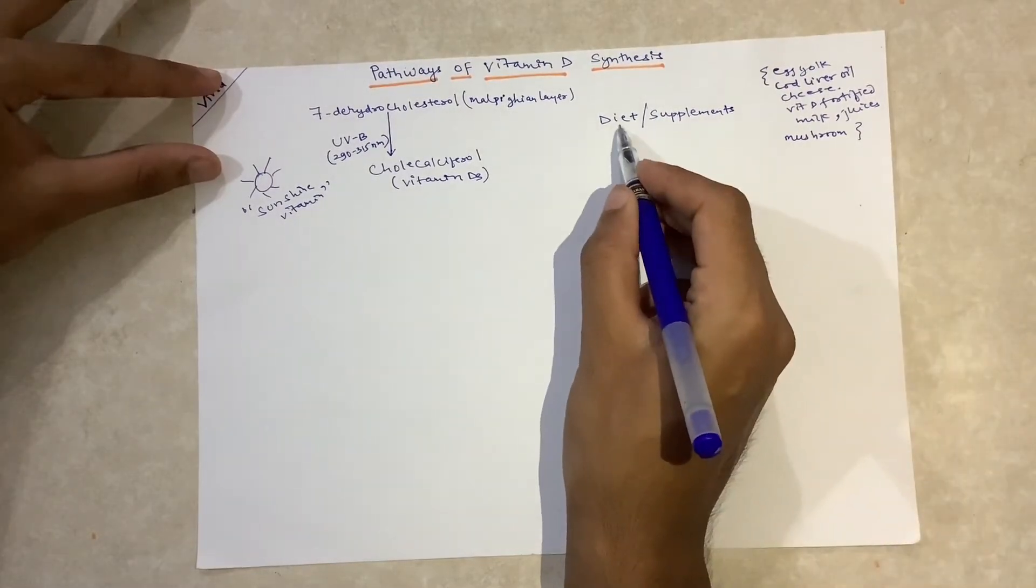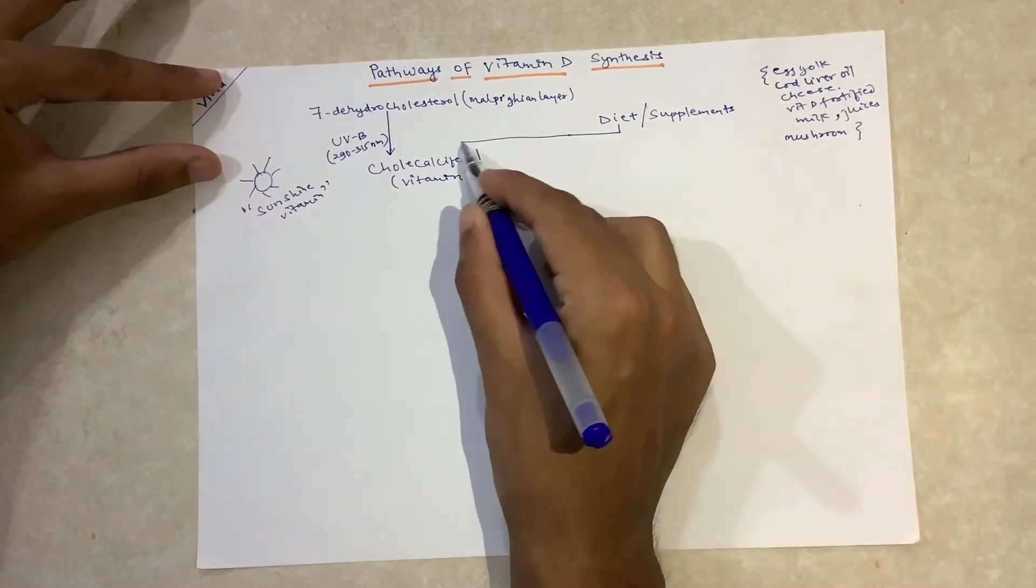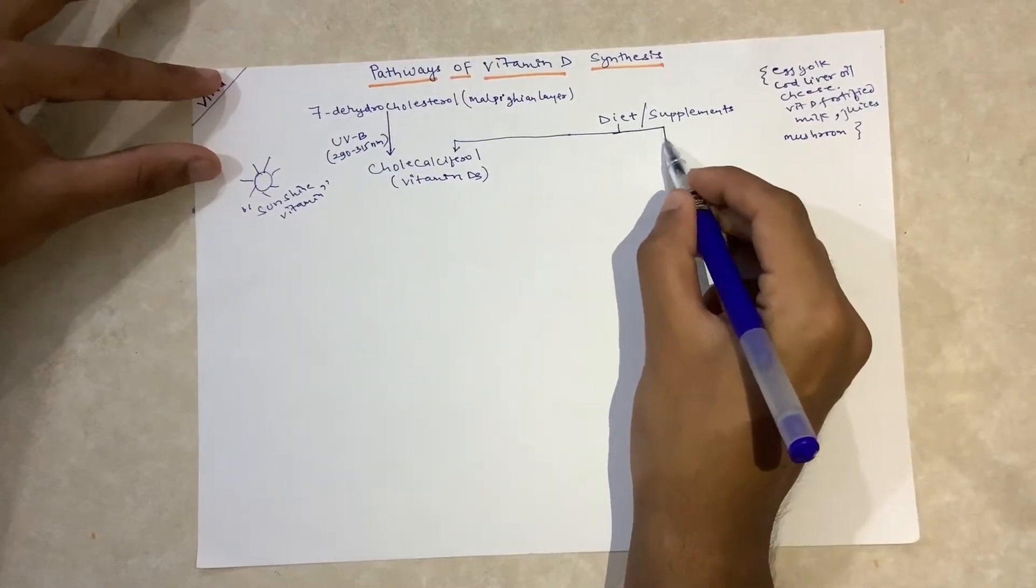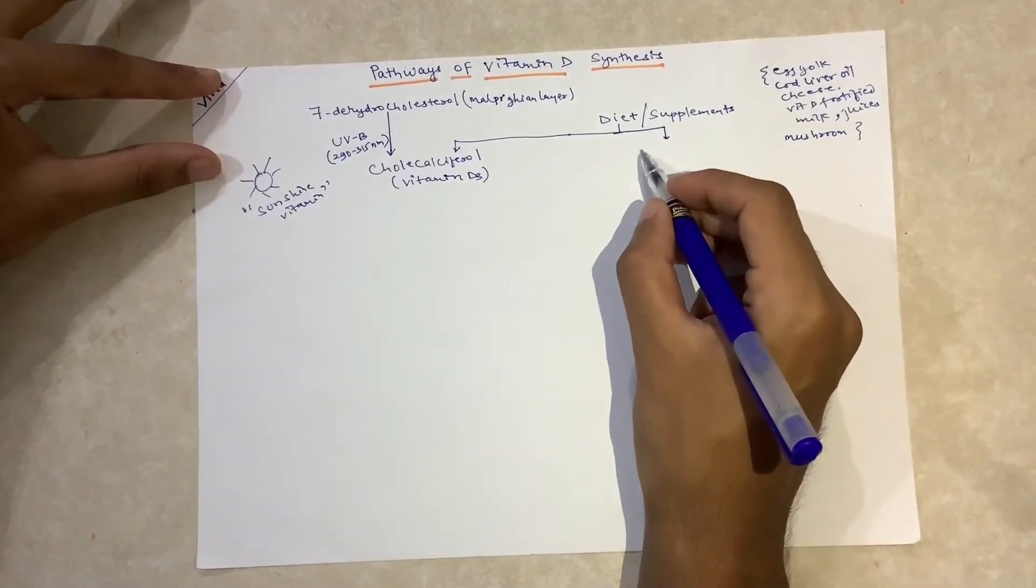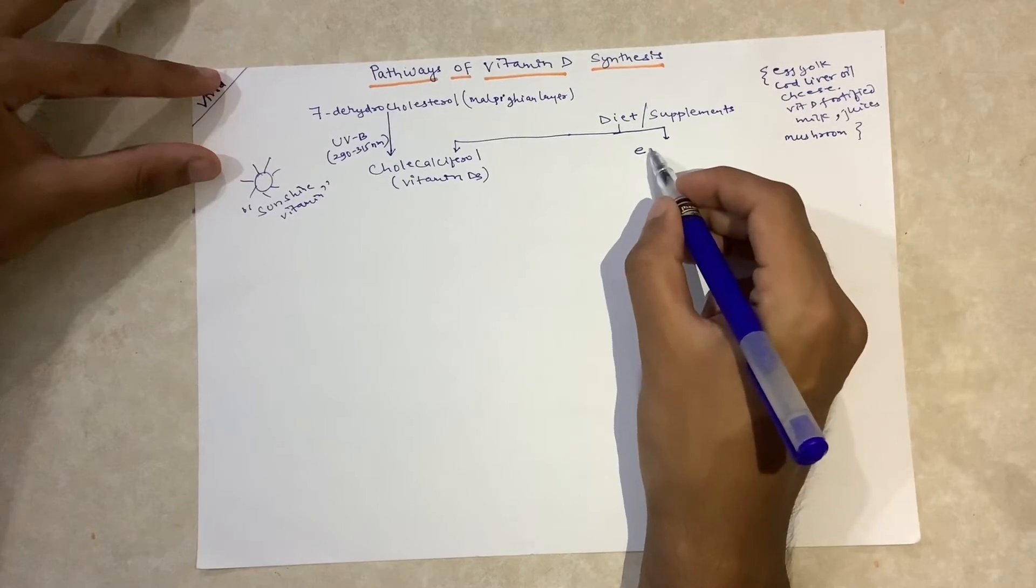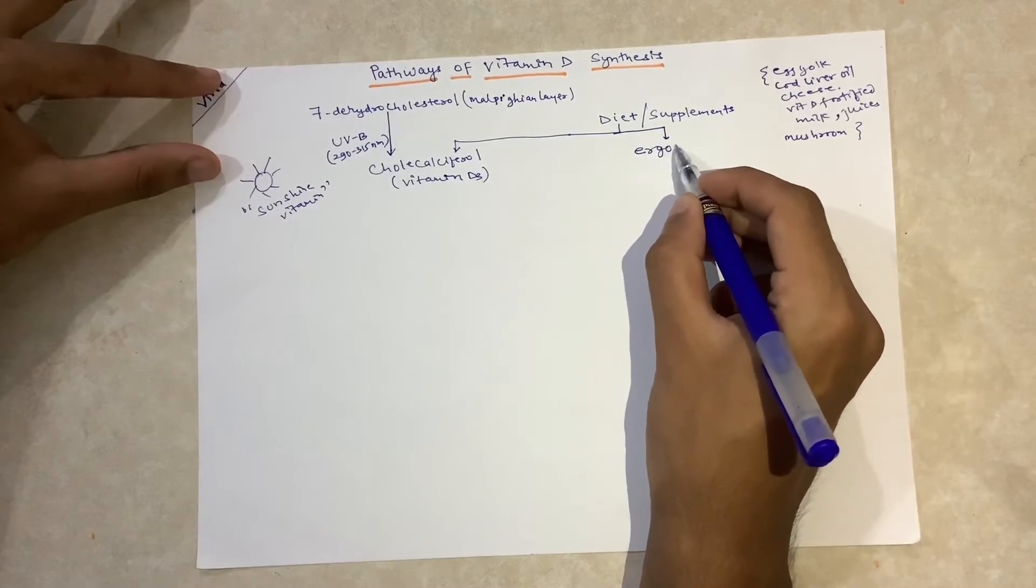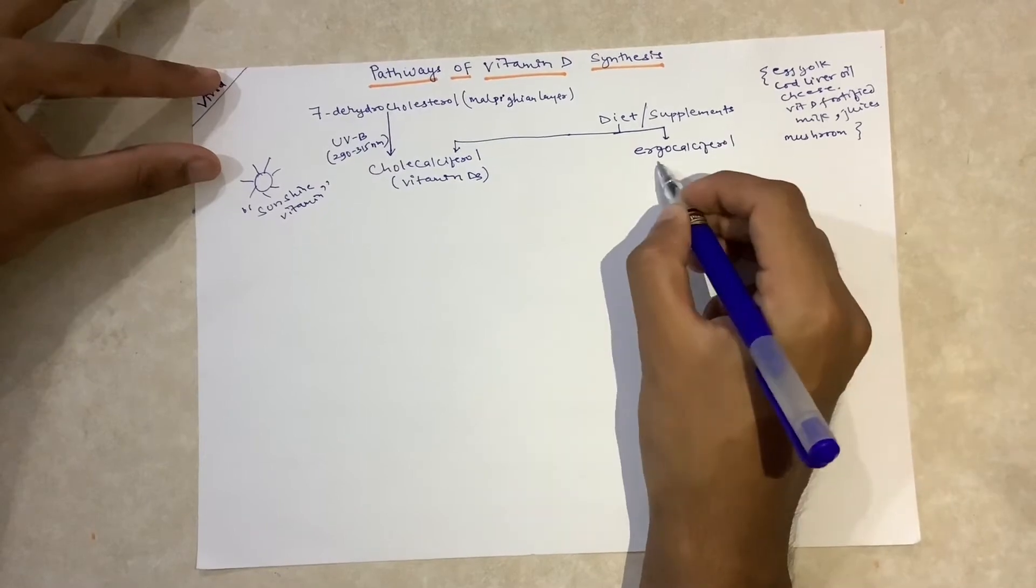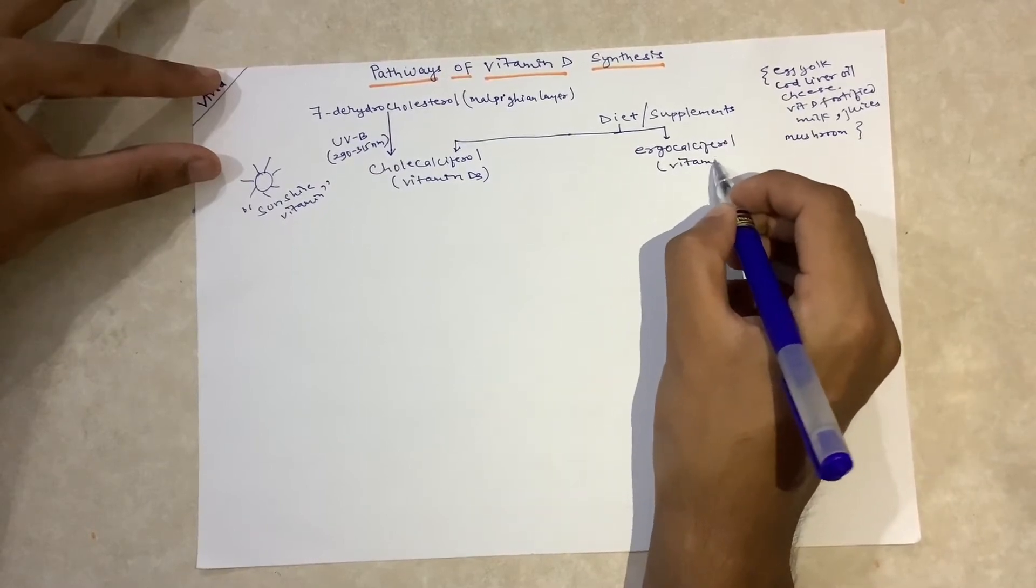The animal source provides cholecalciferol, that is vitamin D3. If we take a plant source, then we get another form of vitamin D, ergocalciferol, which is vitamin D2.